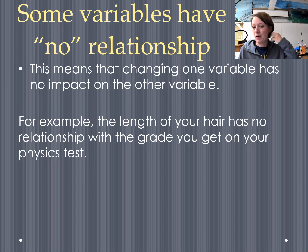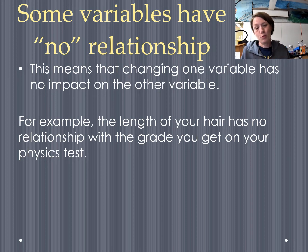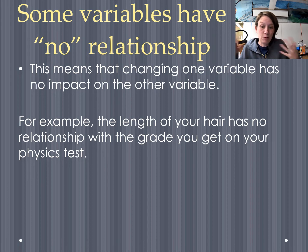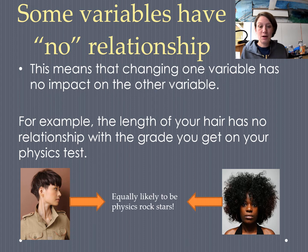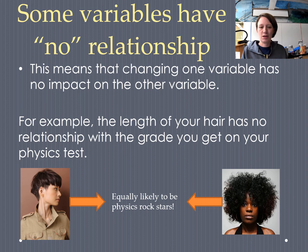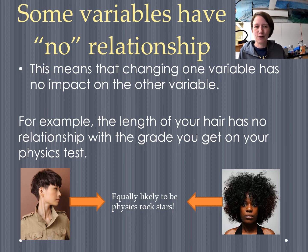For example, the length of your hair, which is a measurable variable, has no relationship with the grade you're going to get on your physics test, which is another measurable variable. These two people have very different hair lengths but are equally likely to be amazing at physics, because hair has no effect on physics grade. That's a no relationship between those two variables.